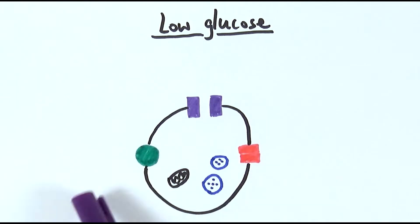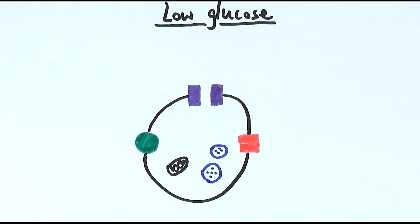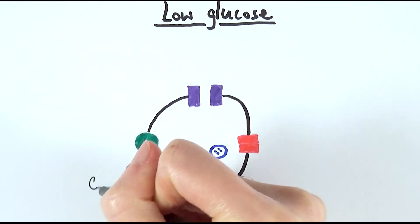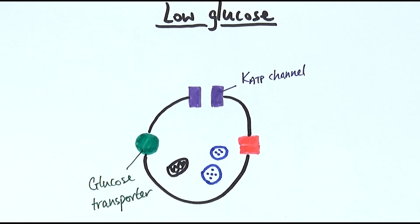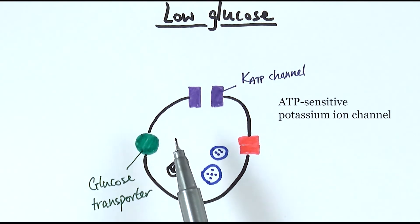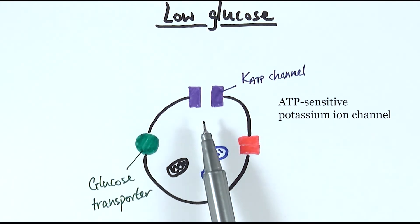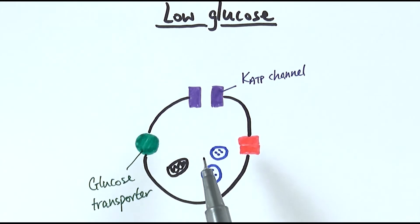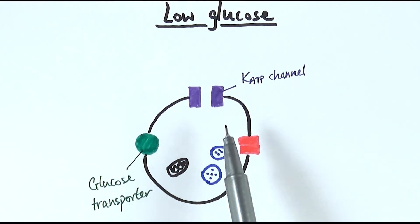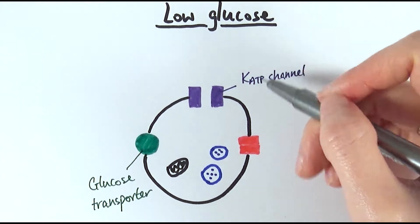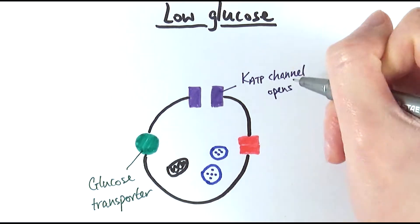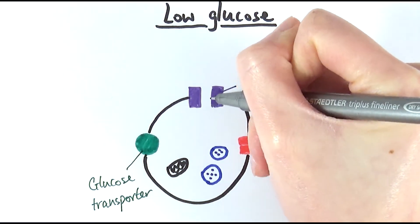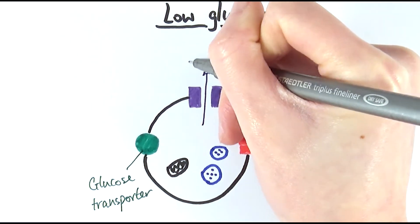Let's have a look at the different structures of a beta cell. On the left hand side we have a glucose transporter, which is a protein carrier that can move glucose into the cell. We also have an ATP-sensitive potassium ion channel. As the name implies, these channels are sensitive to ATP, meaning if ATP is present they would change their structure. In the resting state with low blood glucose, these channels are open, which means potassium ions inside the cell can diffuse out.